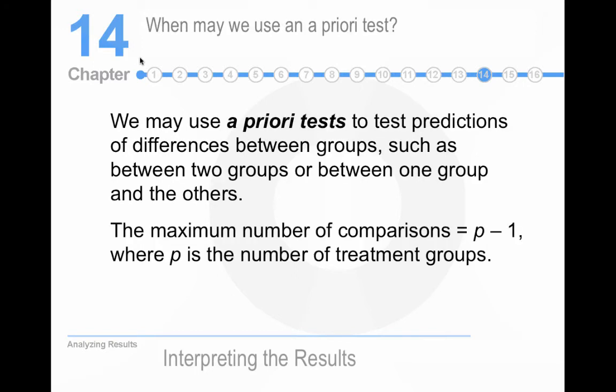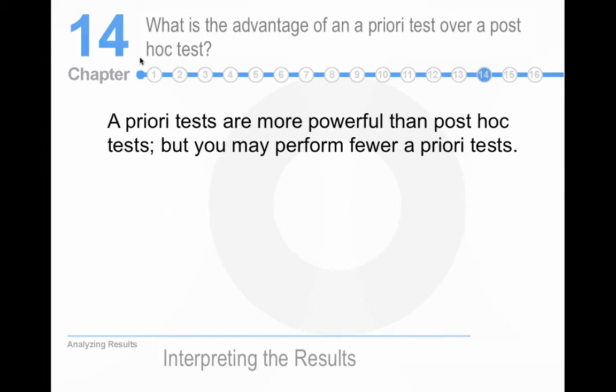What about a priori tests? This is basically your predicted hypotheses, which are more powerful. And that's what it says here. They're more powerful than post-hoc tests, but you can perform fewer of them. So there's always a trade-off, isn't there?